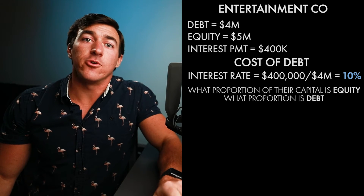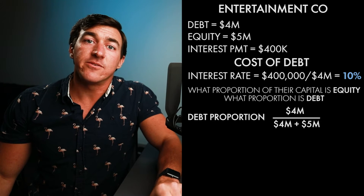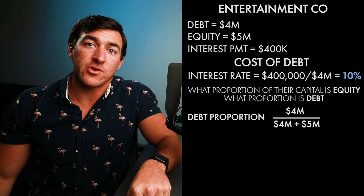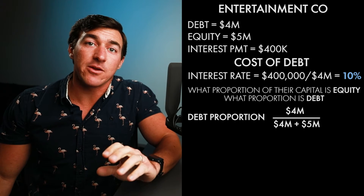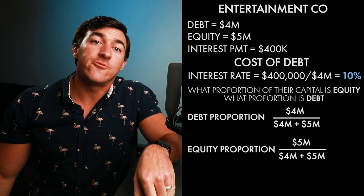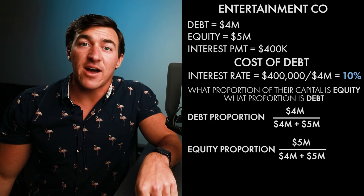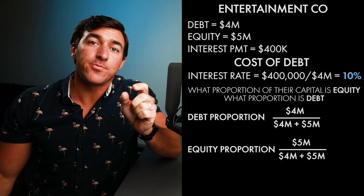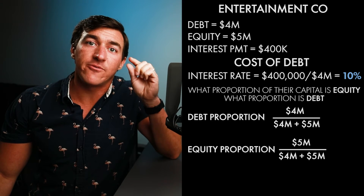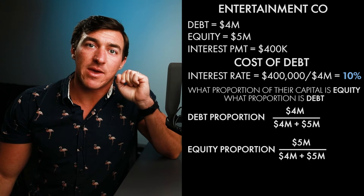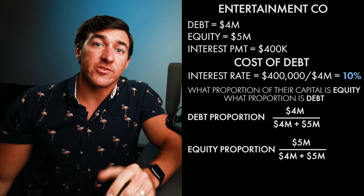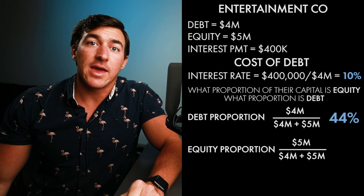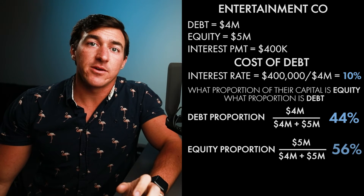All we have to do is take $4 million in debt divided by $4 million in debt plus $5 million in equity. Then we do the exact same thing with equity: $5 million in equity divided by $4 million in debt plus $5 million in equity. All we're doing is taking the percentile of the total that debt and equity make up. Debt makes up 44% of their total capital and equity makes up 56%.